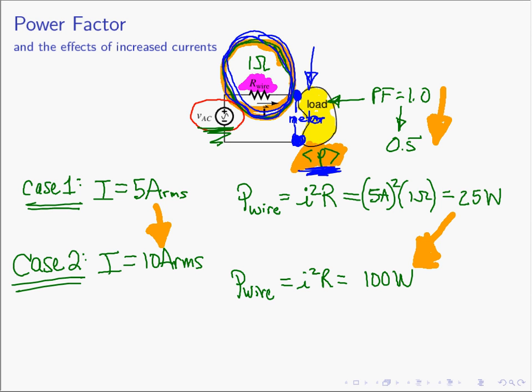When the power factor gets worse, the currents go up and the result is that the utilities lose more and more money in terms of heat in the wires used in the distribution system to bring you that energy.